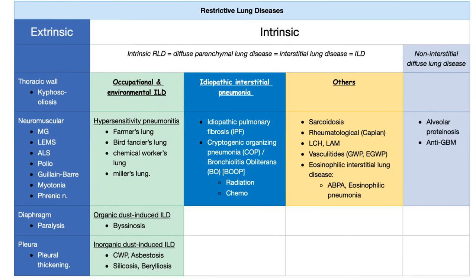Restrictive lung diseases are extrinsic or intrinsic. Intrinsic are parenchymal or non-parenchymal. Parenchymal include three categories: occupational, idiopathic interstitial, and others. Idiopathic pulmonary fibrosis is an idiopathic interstitial lung disease.